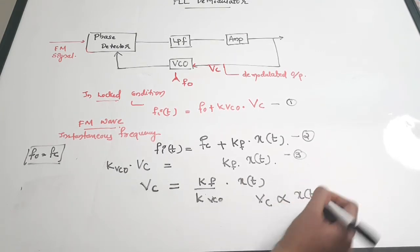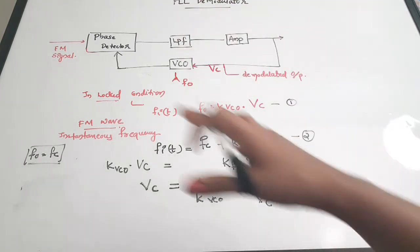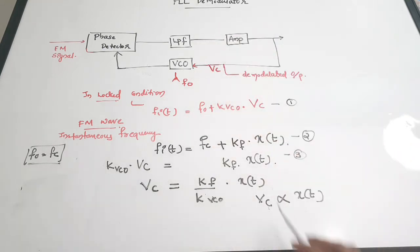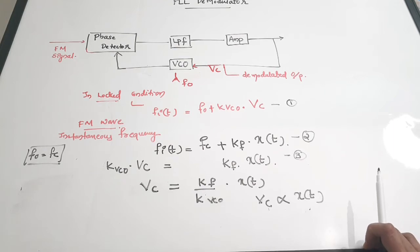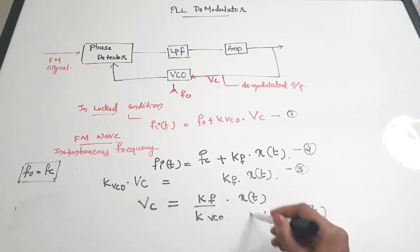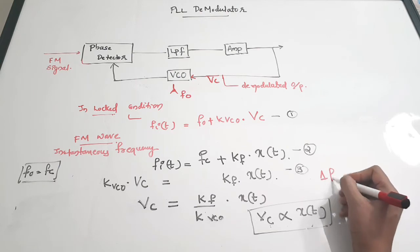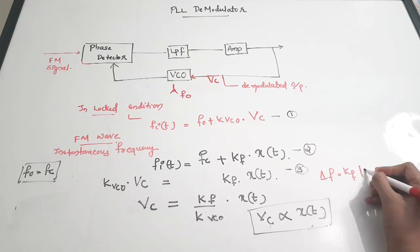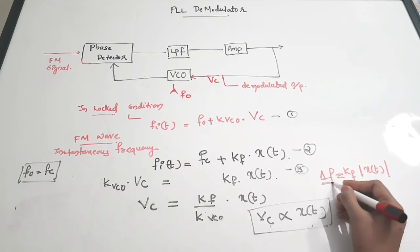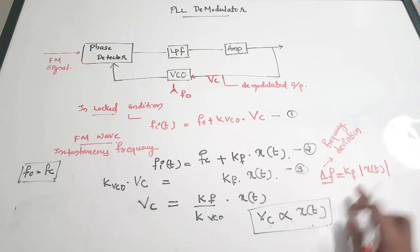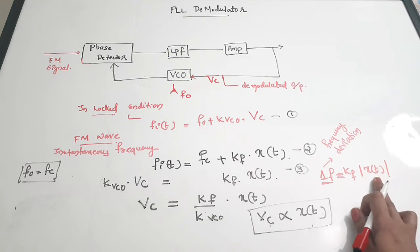Since KF and KVCO are constants, we can write VC as proportional to X(t). This relation indicates that when the PLL is in locked condition, the control voltage of the VCO is proportional to the modulating or information signal. Also, the maximum frequency deviation is given by: delta F equals KF into X(t), where delta F is the frequency deviation.